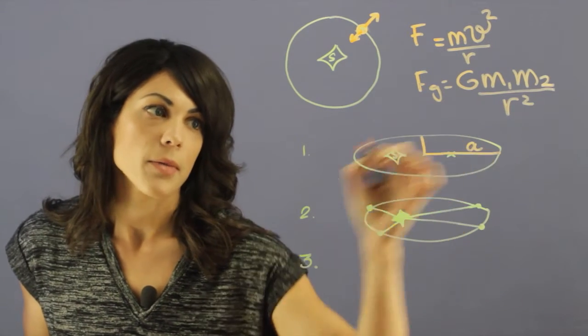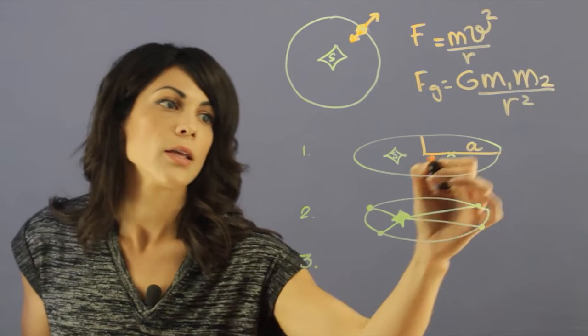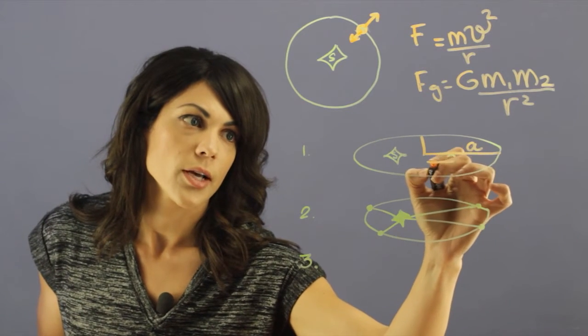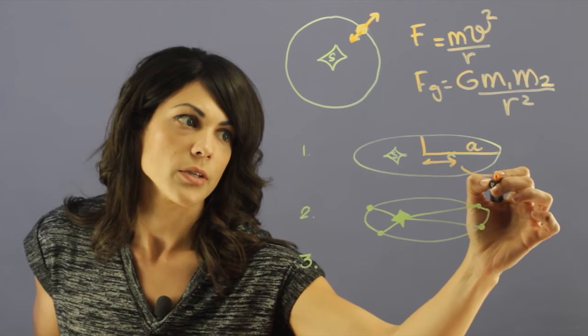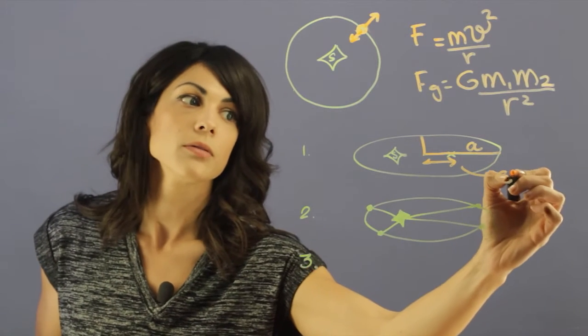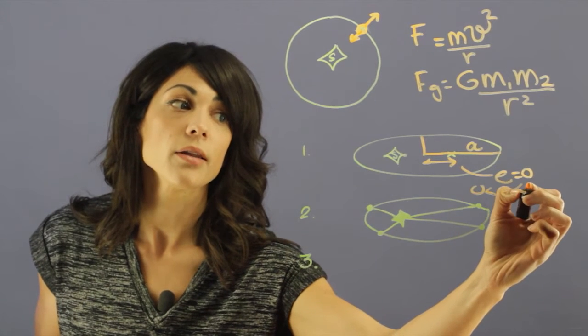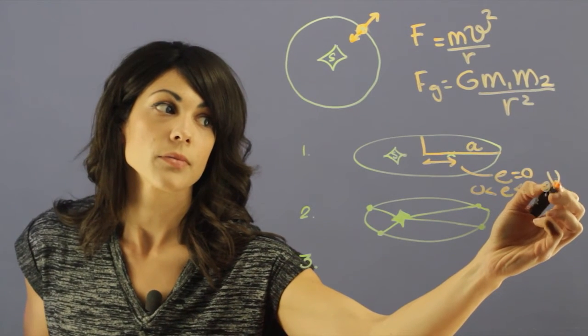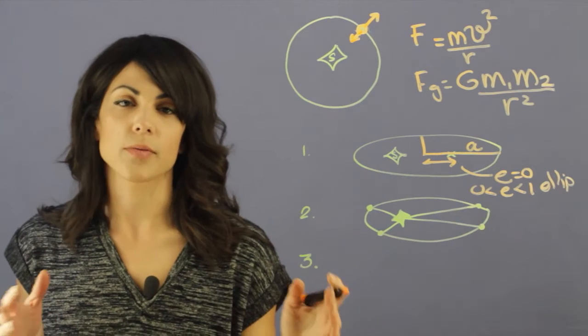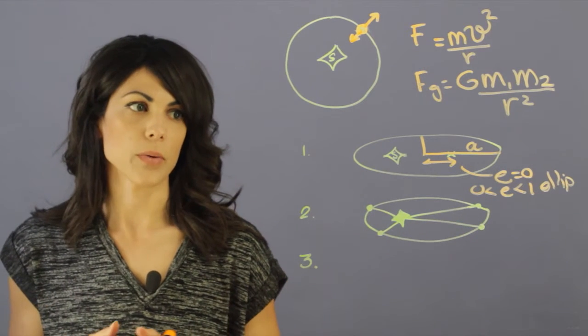And then you have here the semi-minor axis, and this distance over here kind of tells us the eccentricity of the planet. If it's zero, it's circular. If it's between zero and one, it's elliptical. And there's other types of orbits, but I won't go into the detail now.